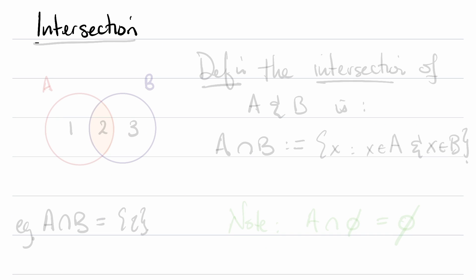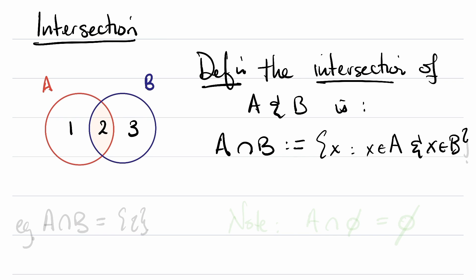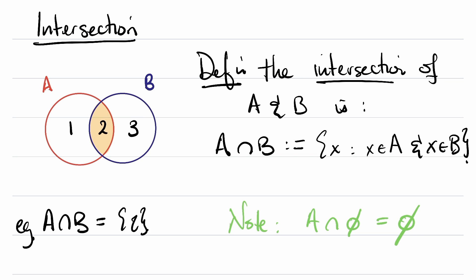Next, let's talk about the intersection. Say we've got the same two sets A and B. Definition: the intersection of A and B, denoted with an upside-down U between A and B, is defined to be all objects x such that x is in A and x is in B. So A intersect B here is going to be {2}. And note that A intersect the empty set — any set intersect the empty set — is going to be the empty set. In fact, any set intersect a subset is going to be that subset.